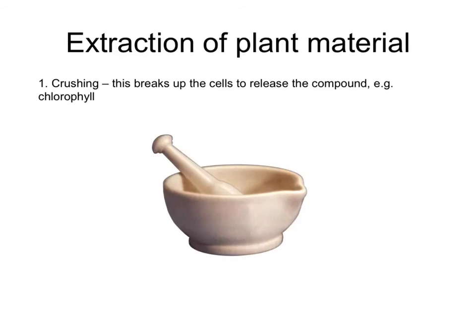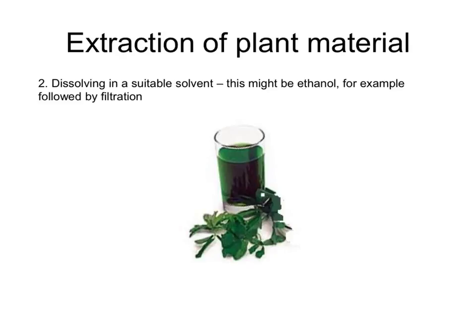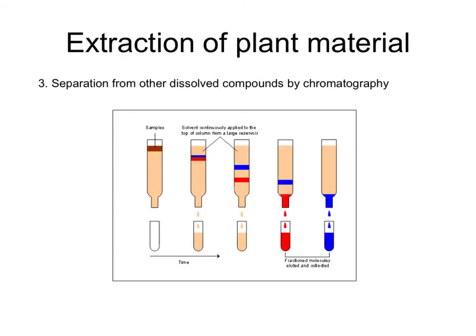In summary, three key steps: first, the plant material must be crushed to release the compound; second, a suitable solvent — such as ethanol or water — is added to dissolve the substance; then it's filtered to remove solid materials; and finally, separation by distillation or chromatography. Chromatography can be done in various ways, but each method uses the movement of a mixture either up or down through a solid or gas, allowing different materials to separate at different rates.